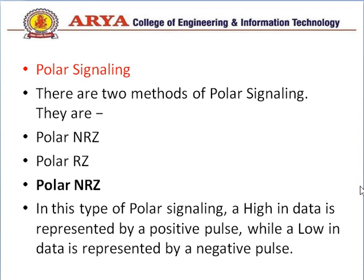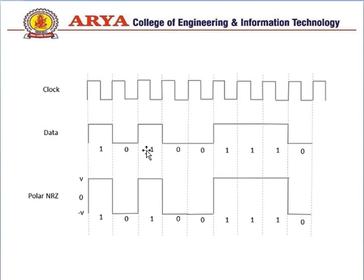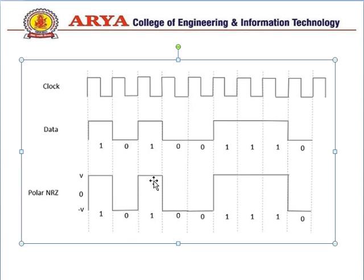Next is polar signaling. There are two methods of polar signaling we will discuss: polar NRZ and polar RZ. In polar NRZ, a high input data is represented by a positive pulse, while a low input data is represented by a negative pulse. In the diagram, for 1 the signal goes from negative to positive; for 0 it stays in the negative; for the next 1 it returns to positive, and so on.